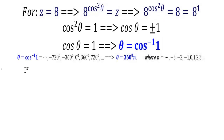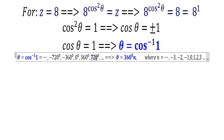For the second solution, theta equals cosine inverse of 1, which is 0 degrees, 360 degrees, 720 degrees, minus 360 degrees, minus 720 degrees, and so on. That is 360 degrees times n, where n is any integer from negative infinity to infinity. When n is 0 it is 0, when n is 1 it is 360, when n is 2 it is 720, when n is negative 1 it is minus 360, and when n is minus 2 it is minus 720.